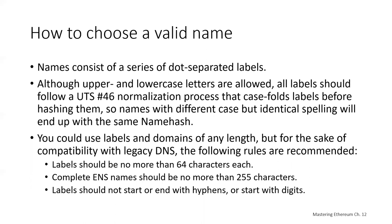Names can consist of a series of dot-separated labels. Although upper and lowercase letters are allowed, all labels should follow a normalization process that will case-fold them for hashing, so names with different cases but identical spelling should end up with the same name hash — it should be case insensitive. Labels should be no more than 64 characters, a complete ENS name should be no more than 255 characters, and labels shouldn't start or end with hyphens or digits.